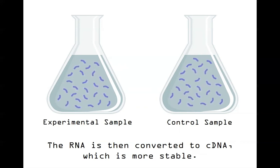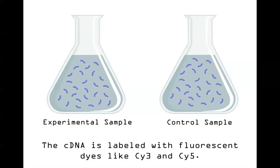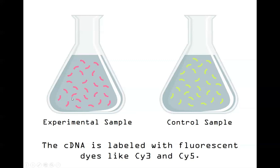In lab we use the RMTA app, but today we're going to look at something called a microarray. To do a microarray, we have to take our samples and distinguish them from each other visually, so a computer can pick this up. We do this through fluorescent labeling. Cy3 and Cy5 are very common fluorescent dyes used in microarray experiments. We'll label the experimental sample so it fluoresces pink, and the control sample so it fluoresces green, allowing us to track each sample by color.